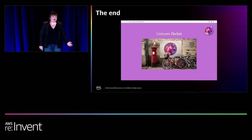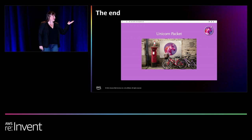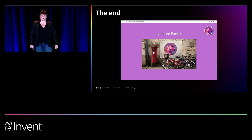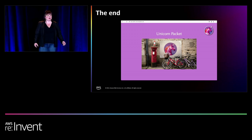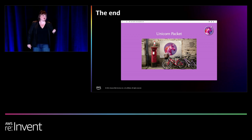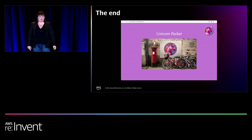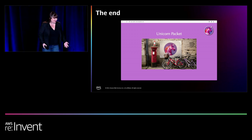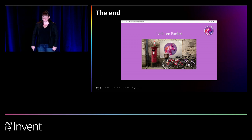At Amazon, we're always innovating on behalf of our customers, and how we do that is by starting with the customer and working backwards. We dive deeply to understand what the customers want, need, where they have frustration — but it's not just about asking them what they want. It's about deeply understanding the situation to invent on their behalf.